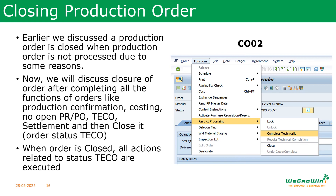Next, closing the order after completing all activities. Earlier we discussed closing the order before starting any activity; this is closing the order after completing all activities — production confirmation, costing, ensuring there are no open purchase orders or purchase requests, and technical completion. After all these are done, perform the closure again. Any pending reservations or similar items will be completely closed. In organizations, it is suggested to follow TECO and then leave it to the controlling team to take care of settlement. Production planning needs to handle up to the TECO process.